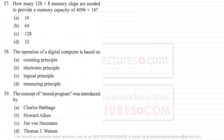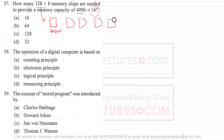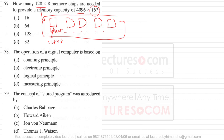Question number 57 asks how many 128×8 memory chips are needed to provide a memory capacity of 4096×16. You can think of each chip like a biscuit — you combine these chips to create a larger device. So we need to find how many 128×8 combinations are needed to build the bigger memory capacity.